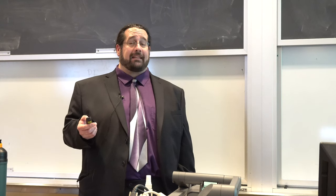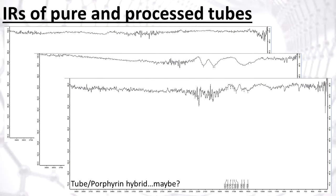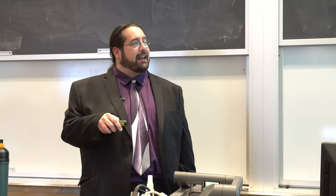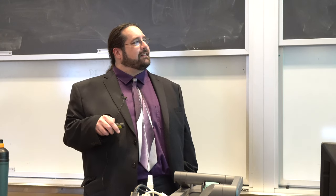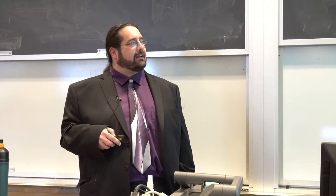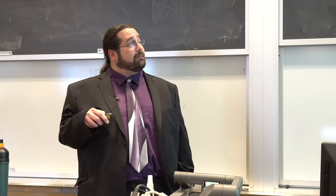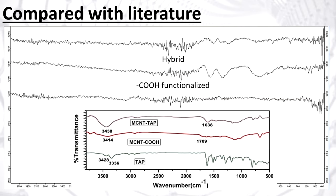I then ran an IR on the porphyrin attached to the tube, but unfortunately I'm not certain I actually got the attachment. Comparing my hybrid IR to the literature hybrid, I'm missing a big peak at 3438. Looking at the literature IR, they are calling the 1709 peak a carbonyl peak, which matched my carboxylic acid step. But my final hybrid spectrum just doesn't look right — I should be seeing certain peaks that aren't there.